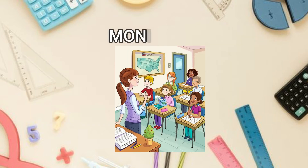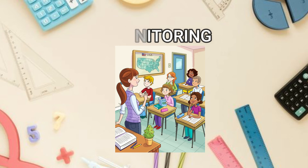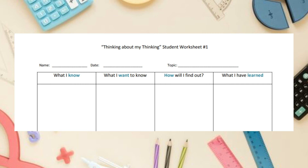Part 2 is monitoring. This happens during the class as students are accomplishing the task. Learners monitor their progress and check language comprehension or production. In order to do this, students must pause and take time to reflect on how things are going. The teacher can help by using a tool like this one from the same reading class.